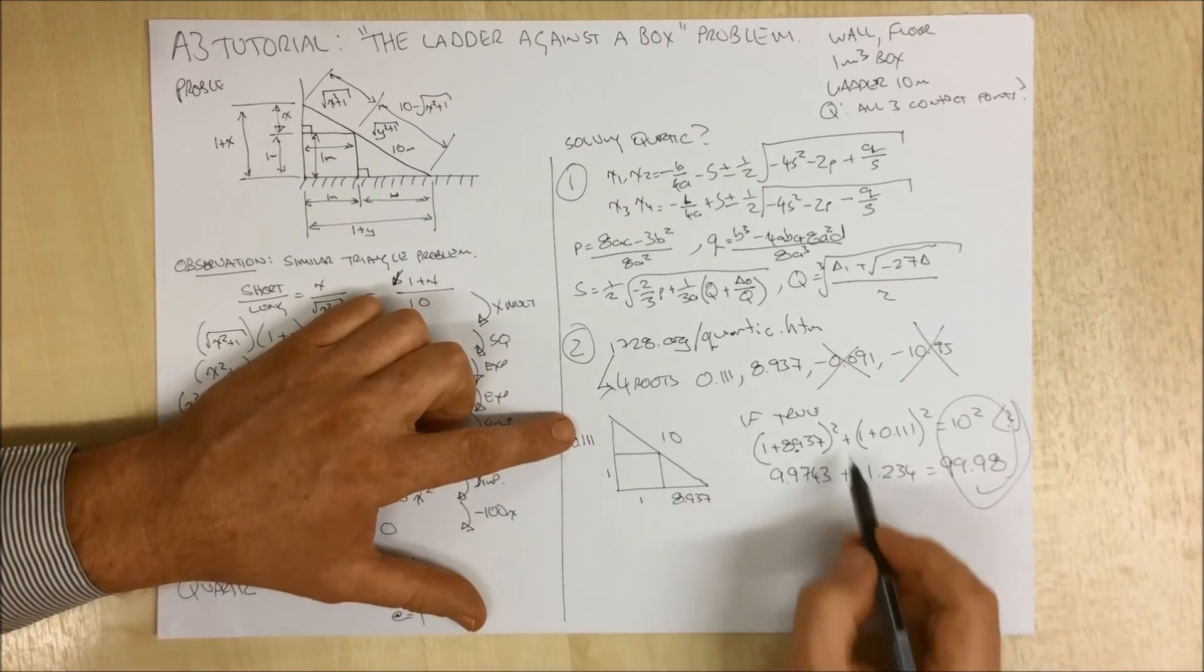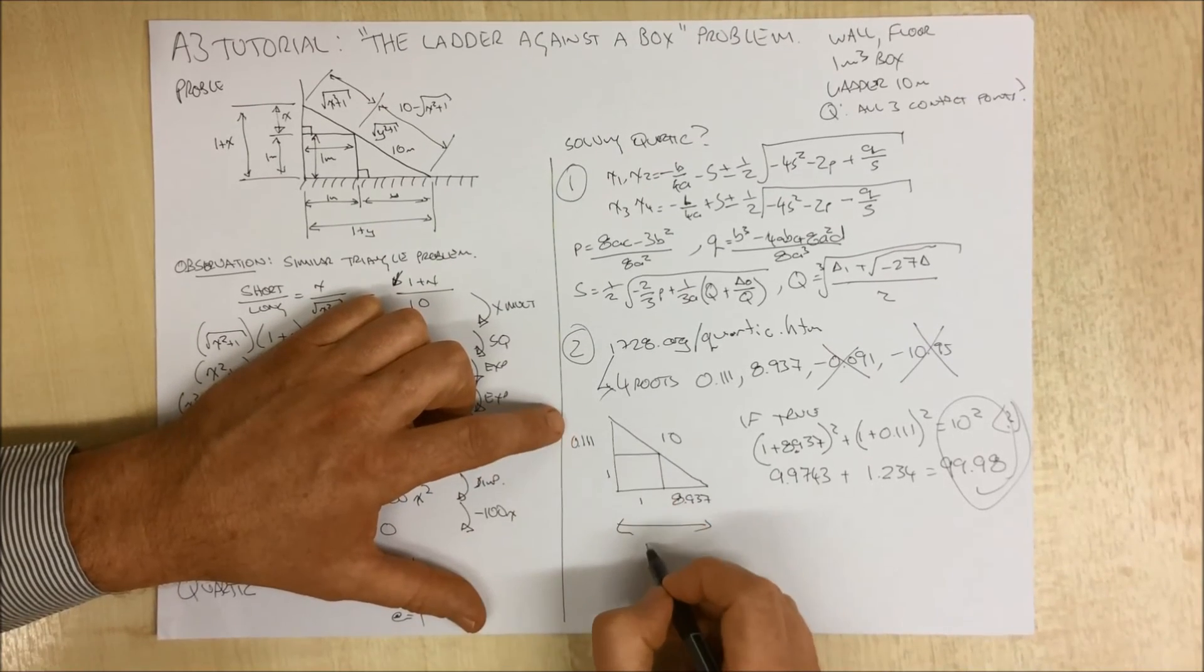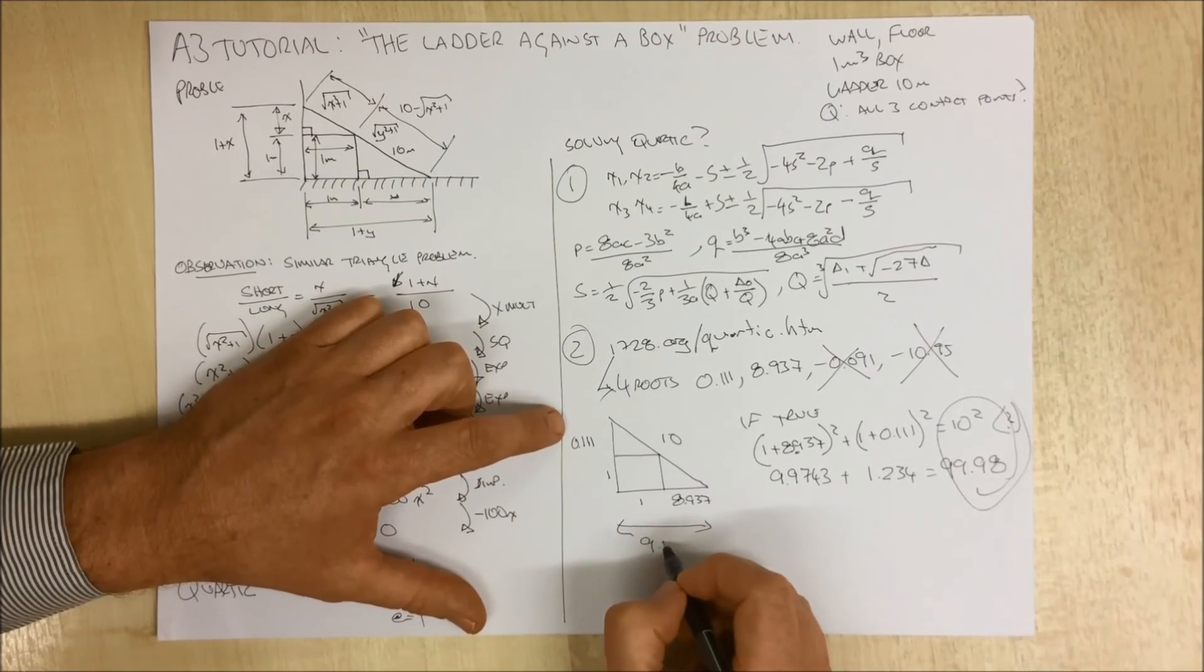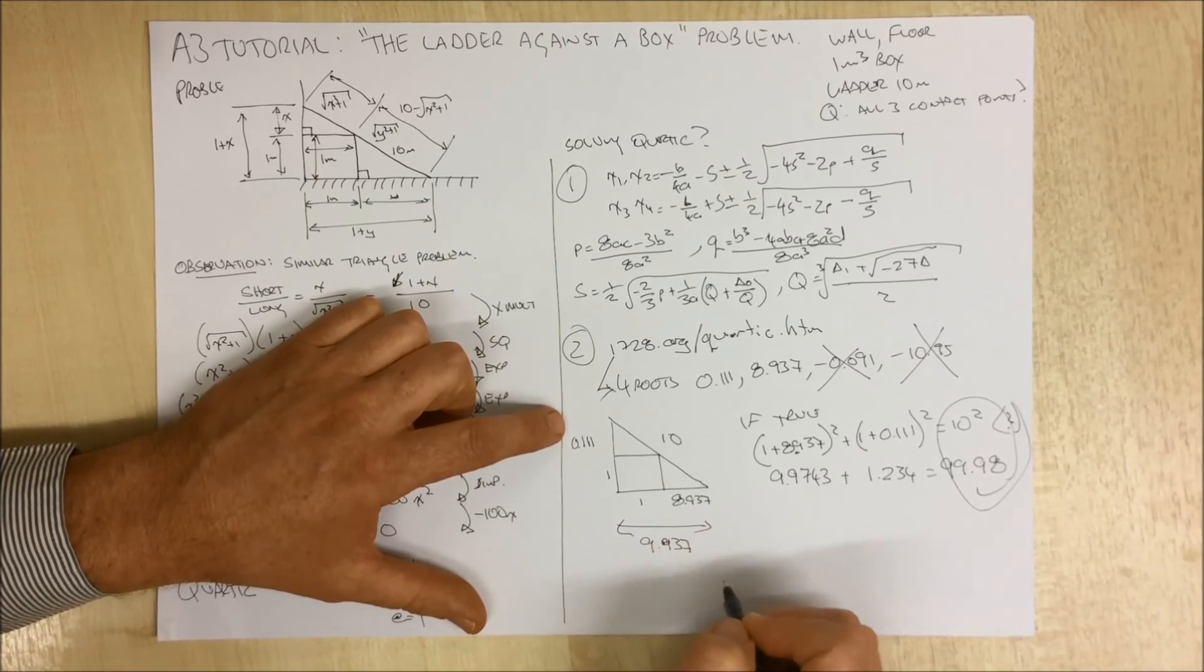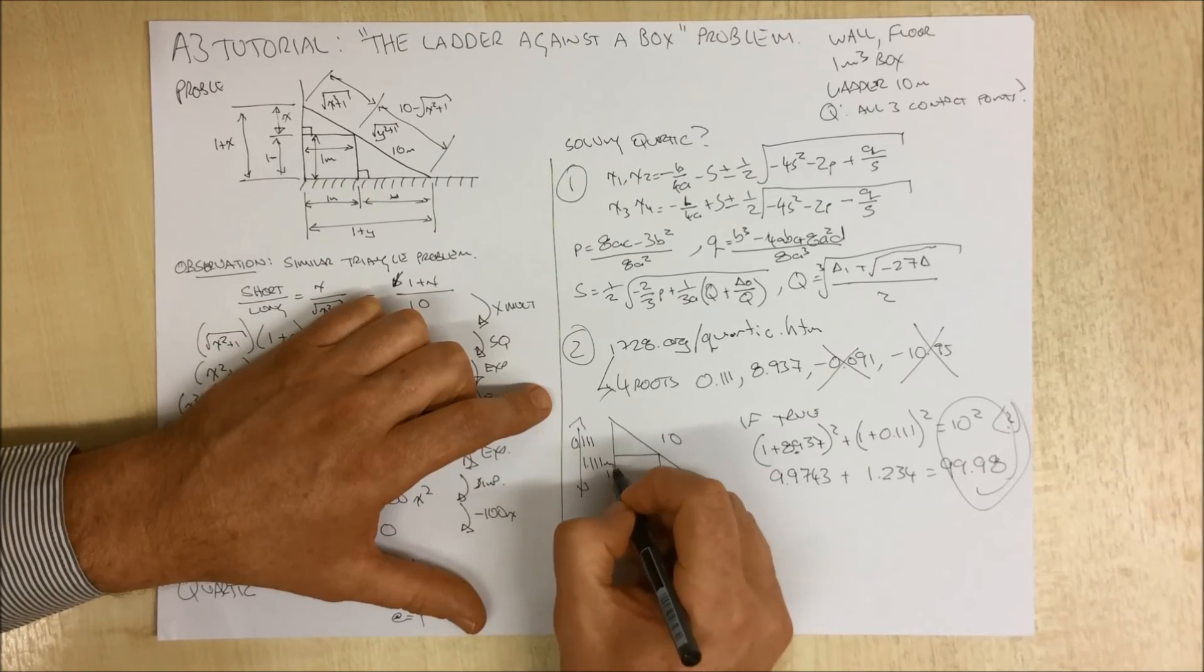So this is our solution, our solutions for our heights here, our lengths, 8.937 and 0.111 meters.